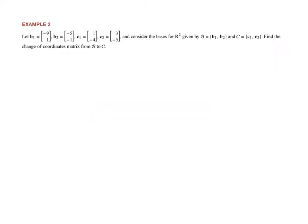In the next example we don't have b in terms of c or c in terms of b. We just have vectors b1, b2 and vectors c1, c2 — bases for R2. We need to find the change of coordinates matrix from b to c. The change matrix involves the c coordinate vectors of b1 and b2.